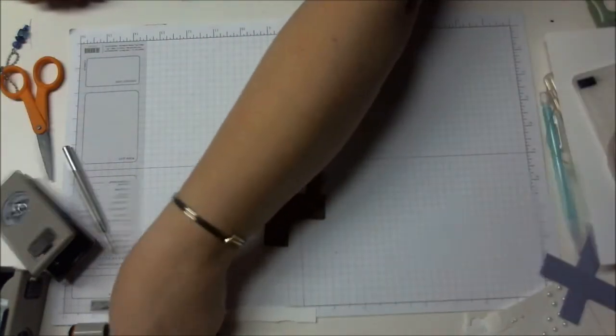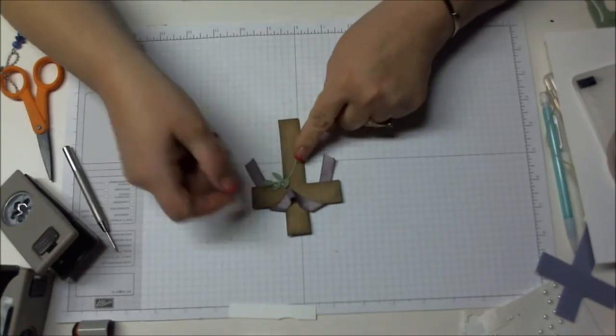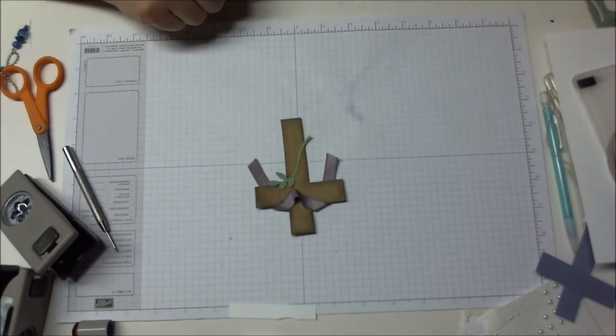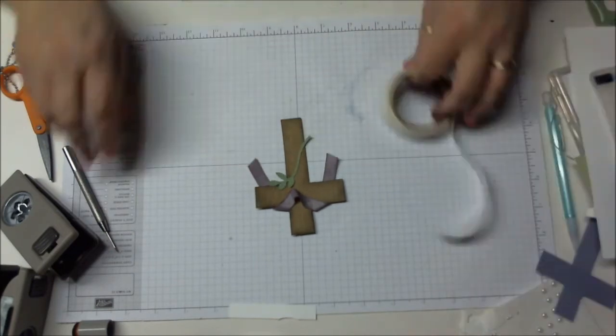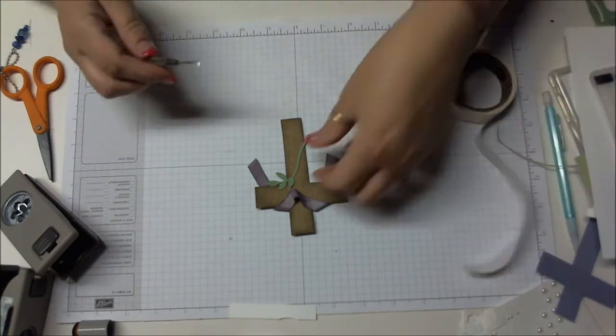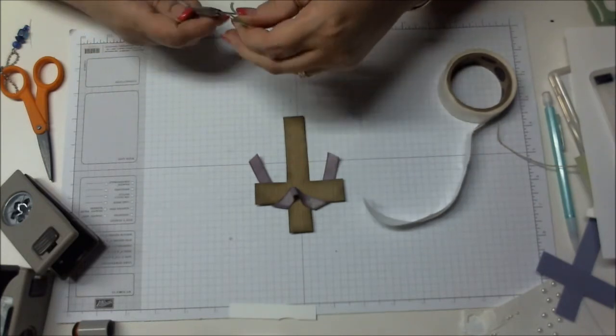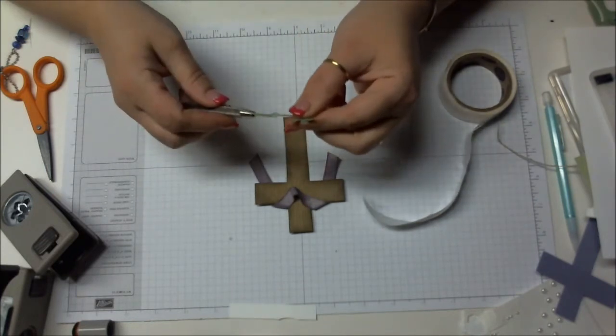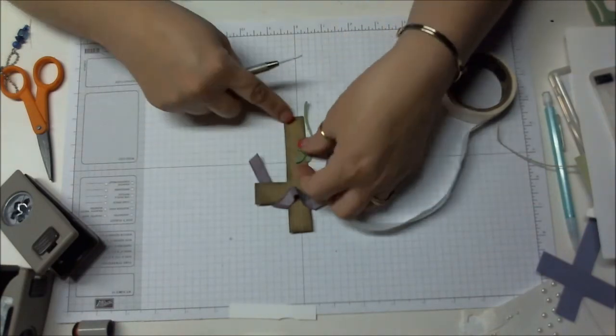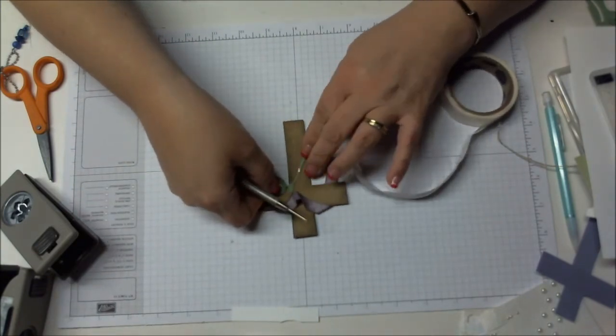Then I took the leaf from the bird punch and I punched out one of them. Again I took a glue dot and I wrapped it around the leaf, and then I stuck that right there. We'll set that off to the side for a minute.